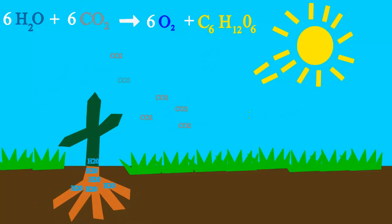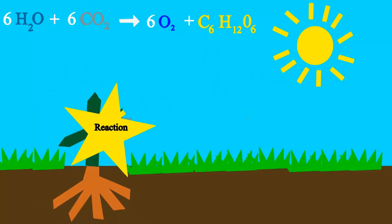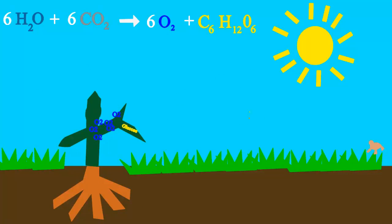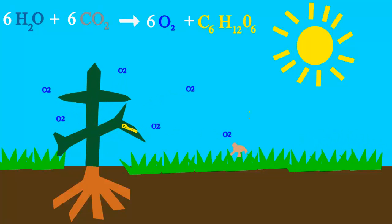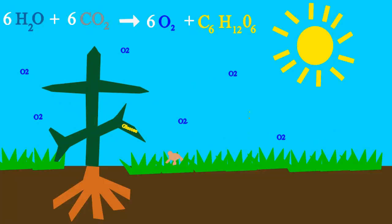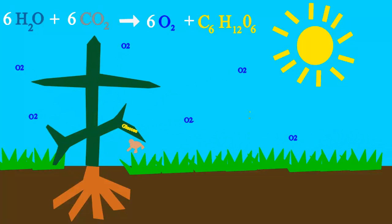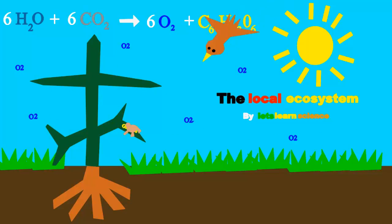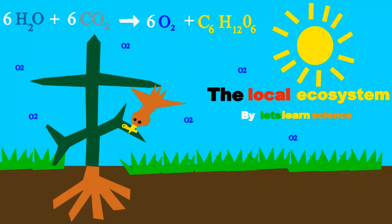Plants take water, sun and CO2 to make glucose, the sugar that they use for food. They also put oxygen into the air so we can share, because oxygen is everywhere.